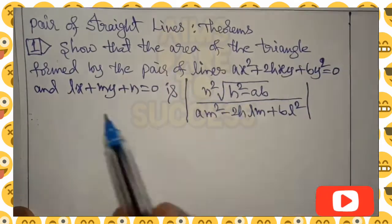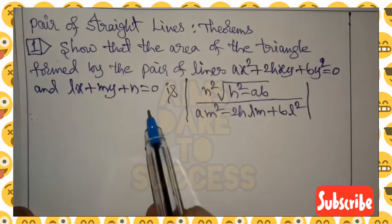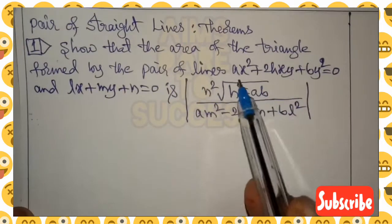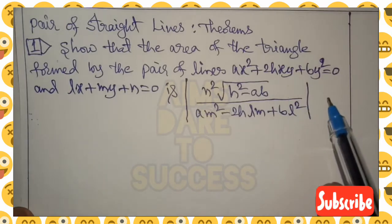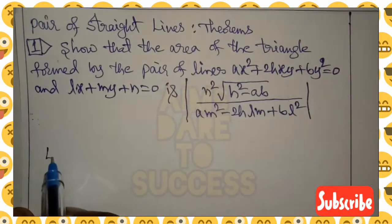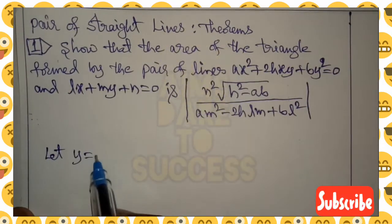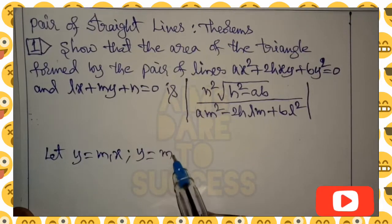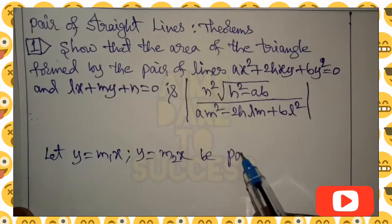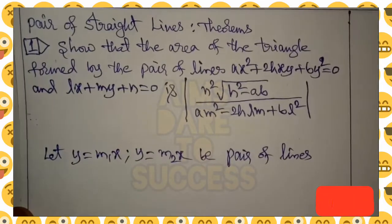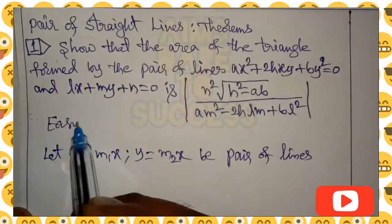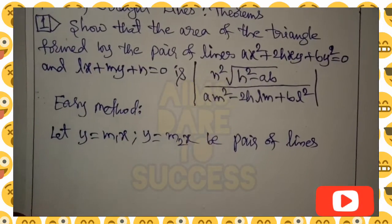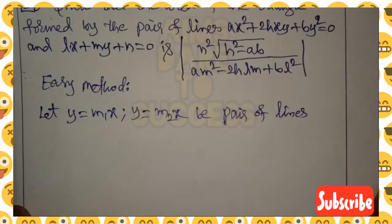Today we are discussing about pair of straight lines, Theorem 1: Show that the area of the triangle formed by the pair of lines ax² + 2hxy + by² = 0 and lx + my + n = 0 is |n² · √(h² − ab) / (am² − 2hlm + bl²)|. When you have ax² + 2hxy + by² = 0, we can take the lines as y = m1·x and y = m2·x.